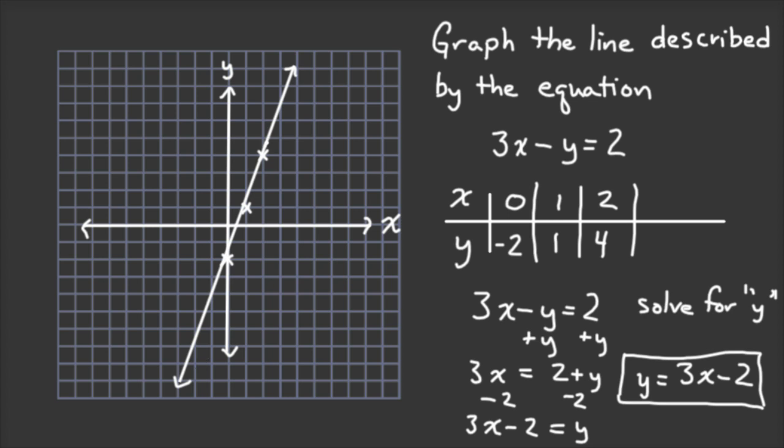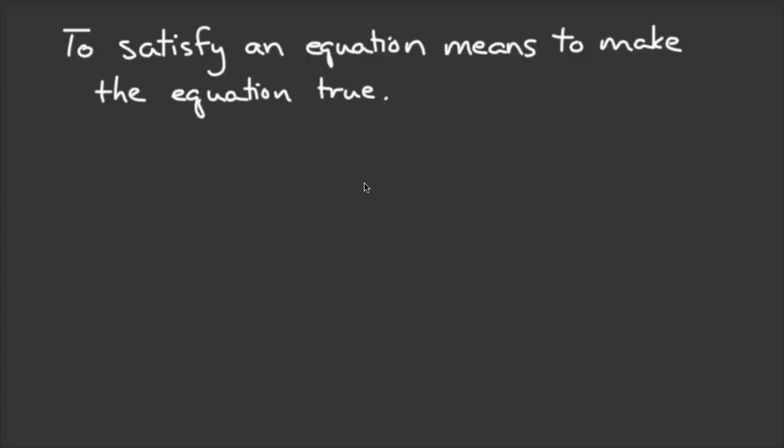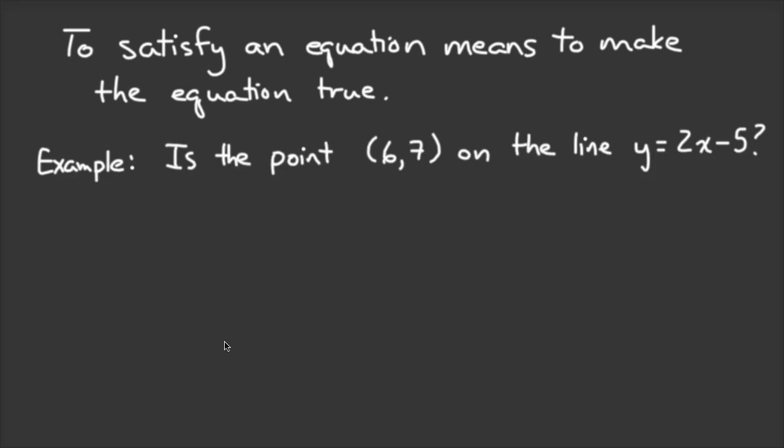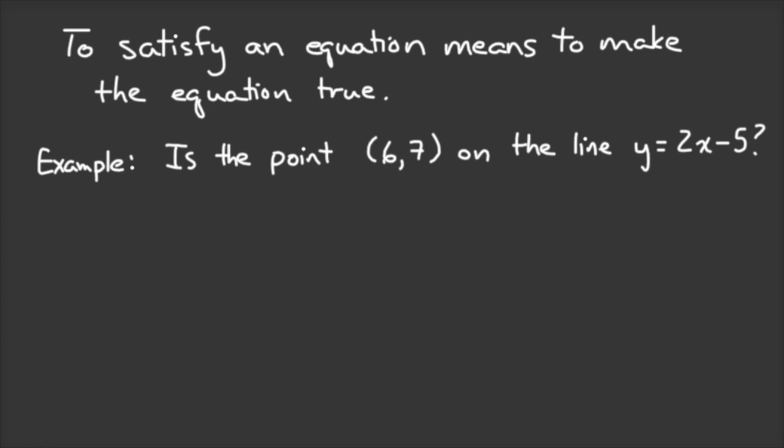Okay, here's another type of question that comes up in the homework. Any point that lies on that line that you've drawn will satisfy the equation of the line if you substitute the coordinates of the point for X and Y. So to satisfy an equation means to make the equation true. So here's a possible question. Is the point on the line Y equals 2X minus 5? But I could have also asked it like this. Do the coordinates satisfy the equation Y equals 2X minus 5?